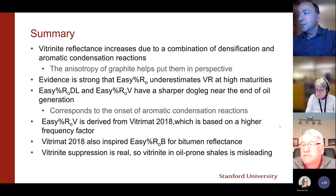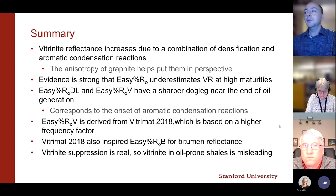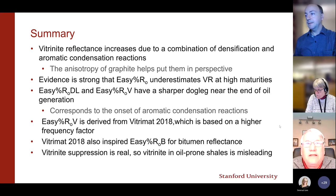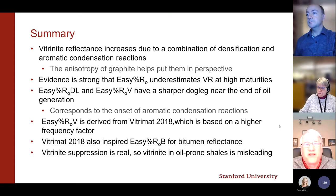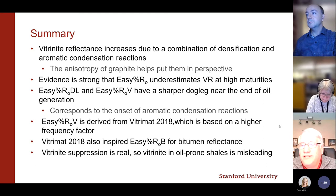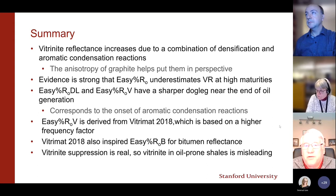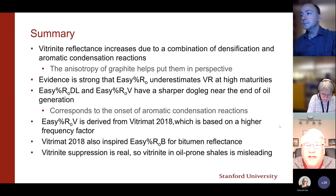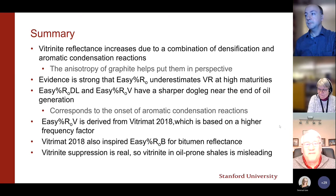Sebastian Hinsken asks: what is the uncertainty range in prediction with the Easy%Ro V model? Alan responds: it's a good question. He thinks of a single standard deviation of about 0.1 Ro — maybe not quite that uncertain, but that's a reasonable estimate. Returning the question: when you see a scatter plot of vitrinite data, is the uncertainty in the model or the uncertainty in the data larger? He's not sure he knows the answer. The moderator adds that different laboratories have been shown to give consistently higher or lower values for the same material, so there is human input in these measurements.